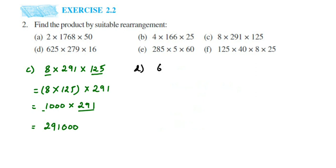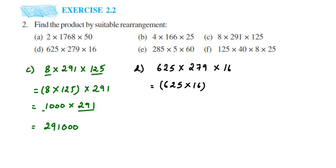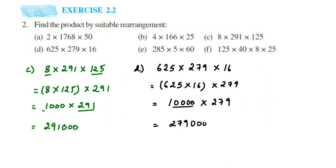In part (d) we have 625 × 279 × 16. Whenever you have a number ending with 5 or 0, multiplying with another number often gives zeros at the end. Here, 625 × 16 = 10,000. So rearrange as (625 × 16) × 279 = 10,000 × 279. That gives 279 followed by four zeros, so the answer is 27,90,000.